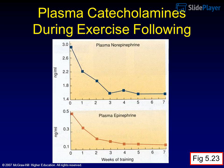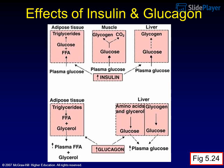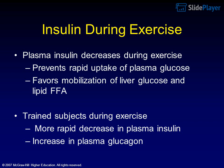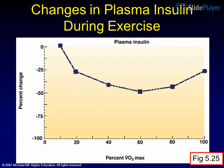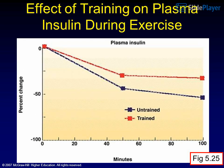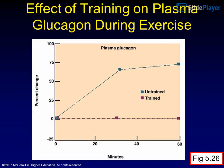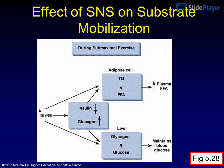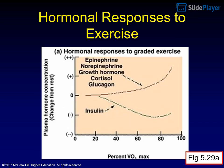Plasma insulin decreases during exercise, which prevents rapid uptake of plasma glucose and favors mobilization of liver glucose and lipid FFA. In trained subjects, there is a more rapid decrease in plasma insulin and an increase in plasma glucagon during exercise. These hormonal shifts, along with effects of the sympathetic nervous system on substrate mobilization, coordinate blood glucose homeostasis during exercise.